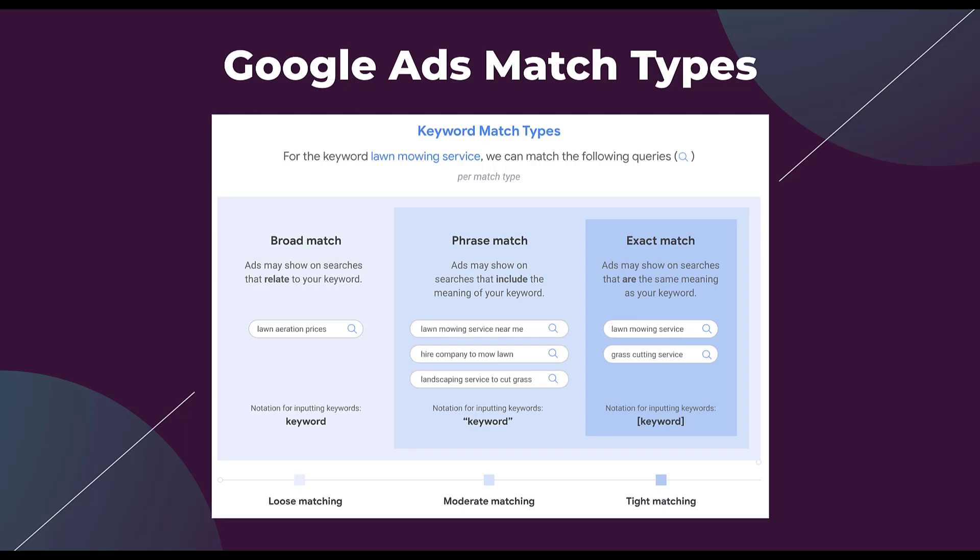The first thing I want to cover is what the match types are. There are going to be three different ones, and as you can see in this graphic from Google, they have different degrees of specificity. The first one on the left says loose matching — that's broad match, where your ads may show on searches that relate to your keyword. The slightly more specific one in the middle with moderate matching is phrase match, where ads may show on searches that include the meaning of your keyword. And all the way to the right is exact match — tight matching, where ads may show on searches that are the same meaning as your keyword.